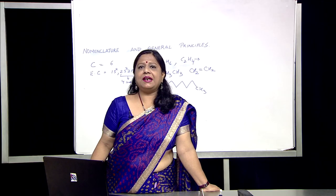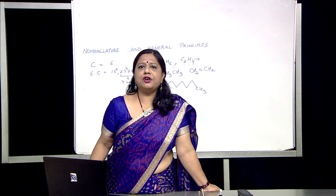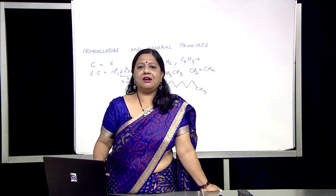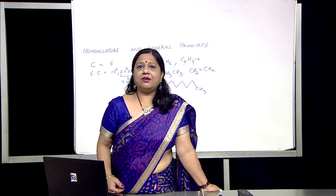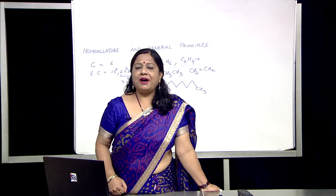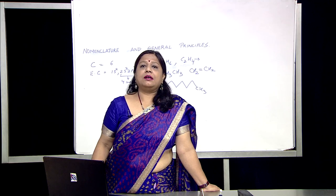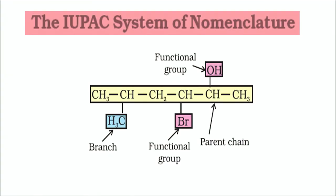Now let us study about the nomenclature of organic compounds, which is the most important topic. Just as parents keep names like Sheila, Rohit, etc., similarly an organic molecule also has to be named by a certain system accepted worldwide — that system is the International Union of Pure and Applied Chemistry, which we call the IUPAC system. Let us see how an organic molecule looks: there is a continuous carbon chain in the box, and outside it you'll find functional groups OH and Br, and another branch in blue which is CH3.